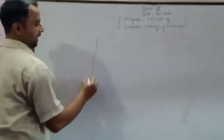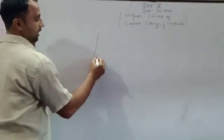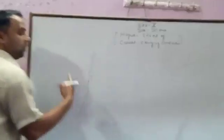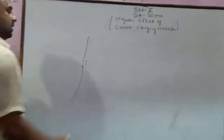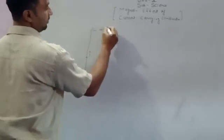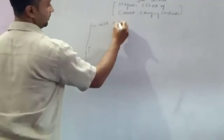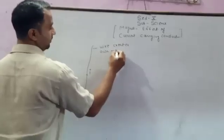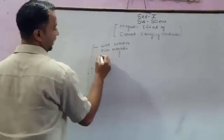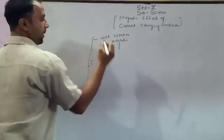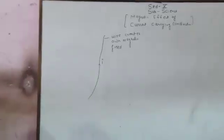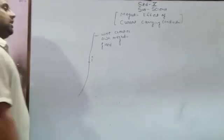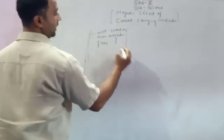The basic concept is: if a simple current-carrying wire carries a current I, it creates its own magnetic field around it. This wire creates a magnetic field. Now we will see how the magnetic field will be represented.